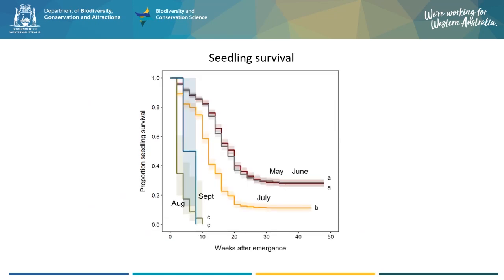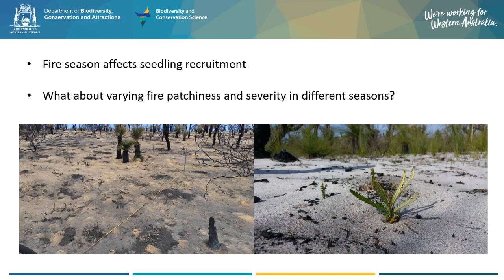Another interesting result from this experiment was that the timing of seed sowing not only matters for seedling emergence, but also for seedling survival and establishment. This figure shows the time course of seedling survival after germination. It shows that seedlings from the earlier sowings, in May and June, had the best survival, probably because they were able to emerge early in winter and have a long establishment period before the summer drought. So from this experiment, we've shown that fire season can affect seedling recruitment. However, we've still got some work to do to understand how these effects might interact with other aspects of fire, such as varying fire patchiness and severity in different seasons.